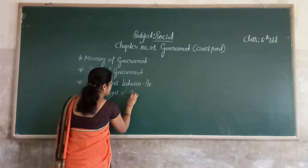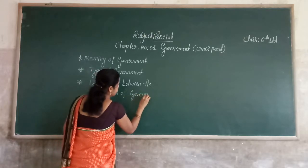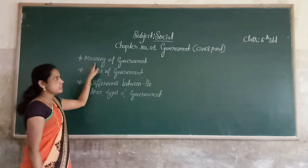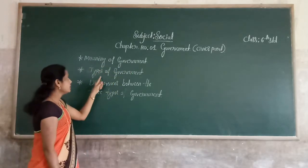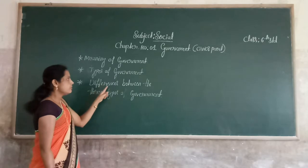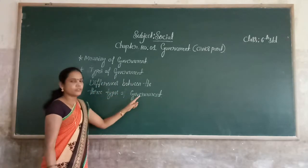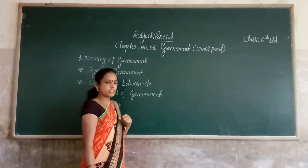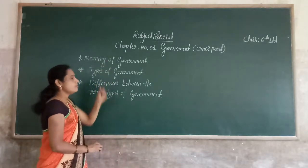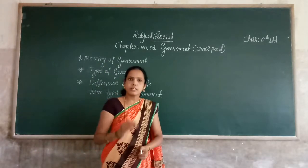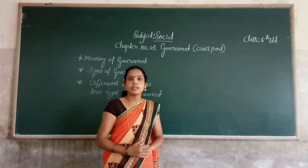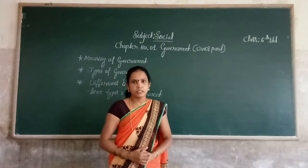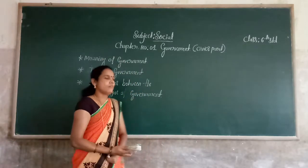The first objective is the meaning of government, second is types of government, and third is the differences between the three types of government. These are all the objectives we will learn in detail in this chapter. First learning point: meaning of government. First we will all learn what is the meaning of government.